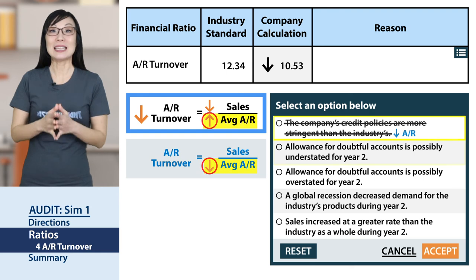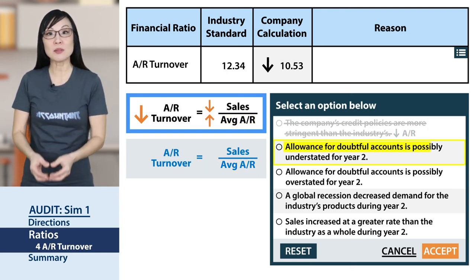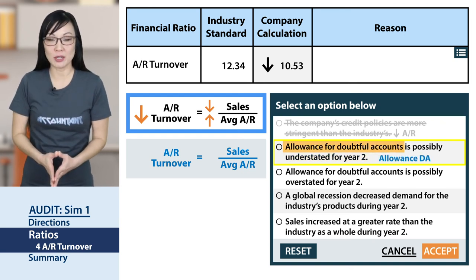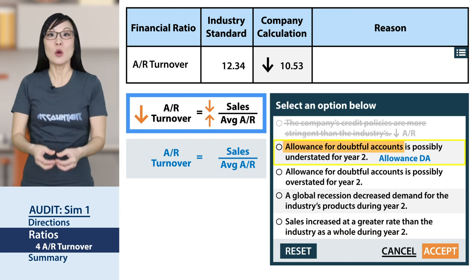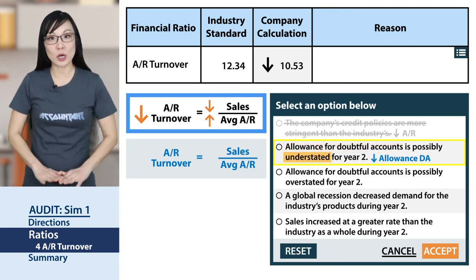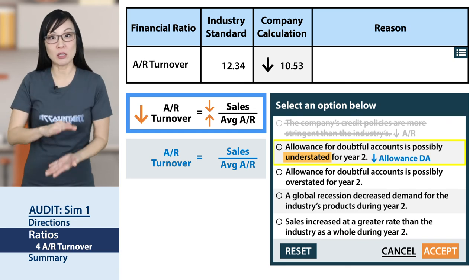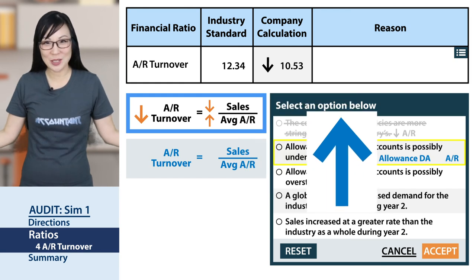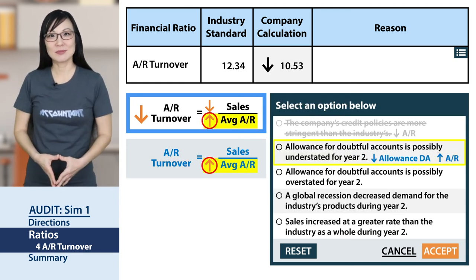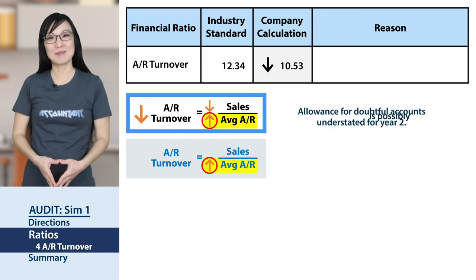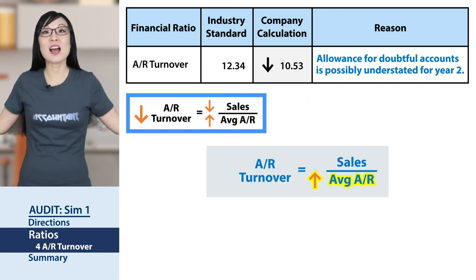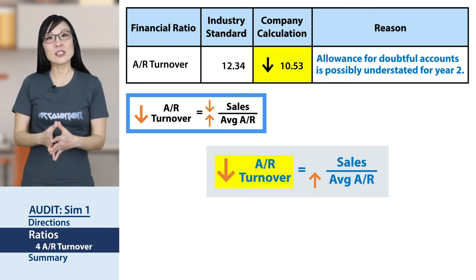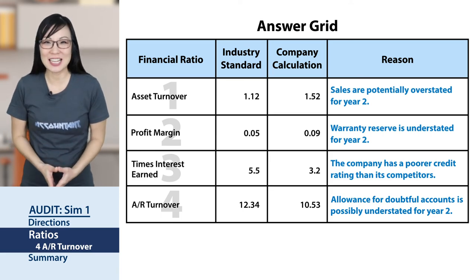Choice B: allowance for doubtful accounts is possibly understated for year two. The allowance is a contra account to accounts receivable. When the allowance is understated, it's lower — a smaller contra, a smaller minus — so net accounts receivable is higher. Plugging that into our ratio — that's a match, because when accounts receivable is higher, accounts receivable turnover is lower. Here's the completed answer grid — we're done.